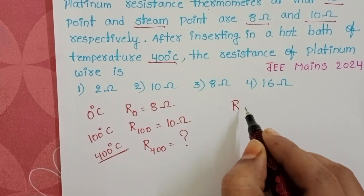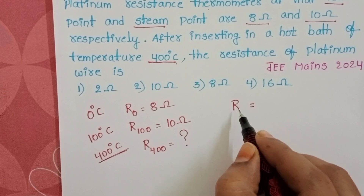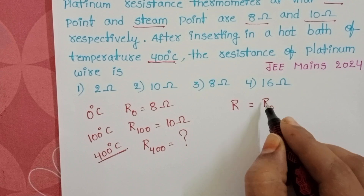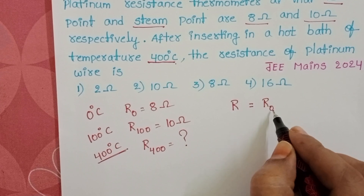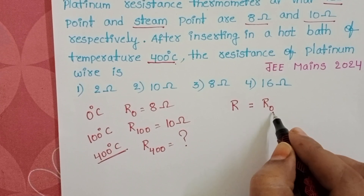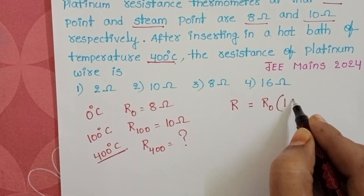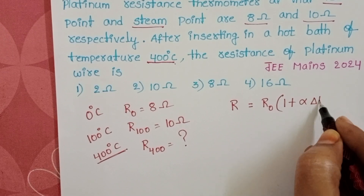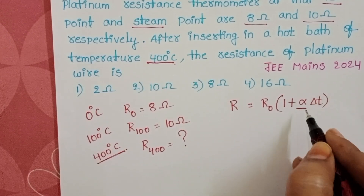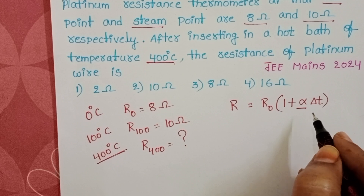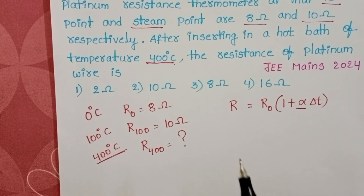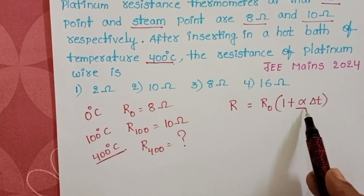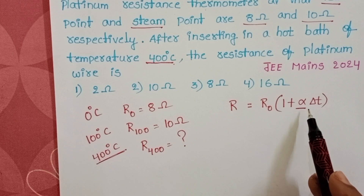The formula is R = R₀ × (1 + α·ΔT), where R is the resistance, R₀ is the resistance at 0 degree Celsius, and alpha is the temperature coefficient of resistance. In the given problem we don't know the value of the temperature coefficient of resistance.